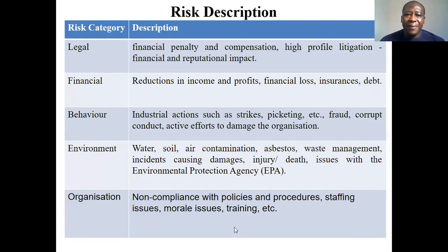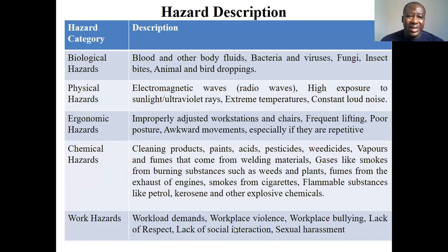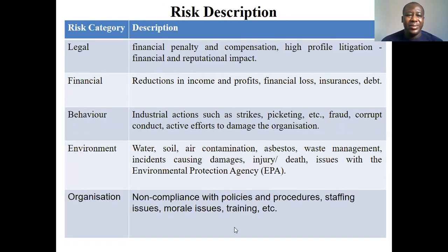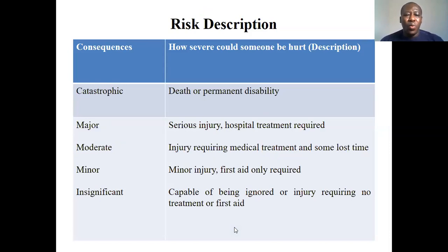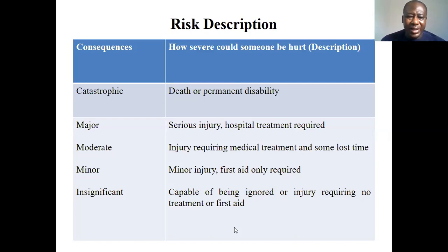There is also a risk category table with descriptions — whether the risk is legal, financial, behavioral, environmental, or organizational. And then there is risk description covering consequences and their severity — whether it is catastrophic, major, moderate, minor, or insignificant. For example, catastrophic means death or permanent disability; major means serious injury requiring hospital treatment. The frequency of risk table covers likelihood — certain to occur, very likely, possible, or unlikely — with descriptions such as 'certain to occur' meaning it is expected to occur in most circumstances.